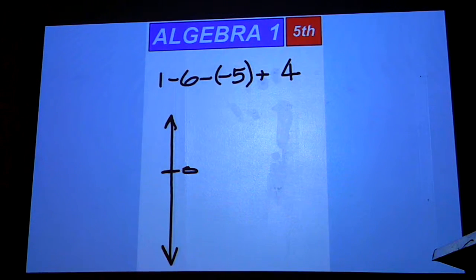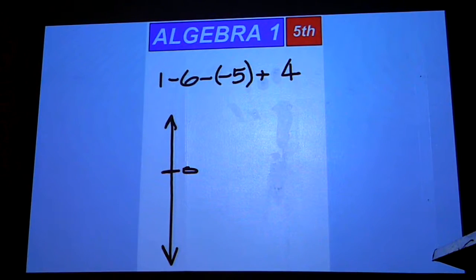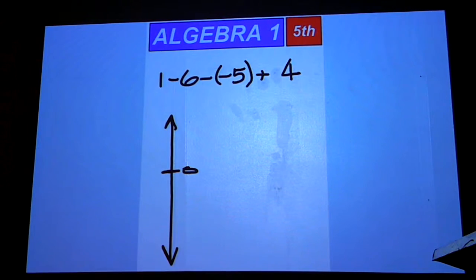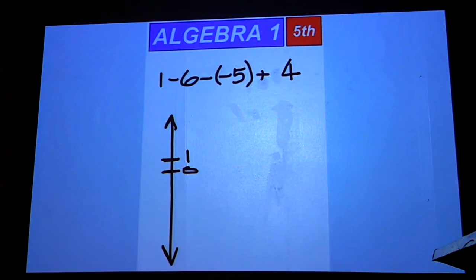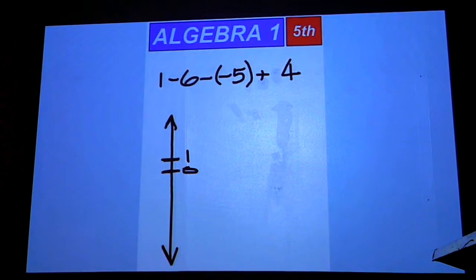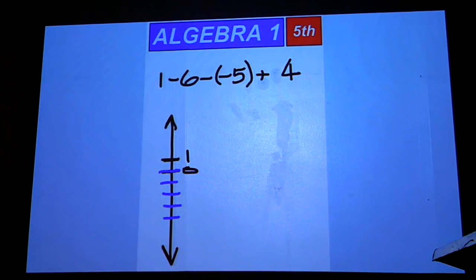Okay, that bell always goes off when I'm in the middle of a sentence. We'll start at 1 and then we're going to subtract 6. So we'll go down 1, 2, 3, 4, 5, 6.